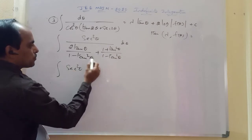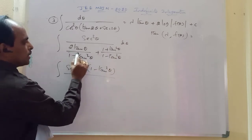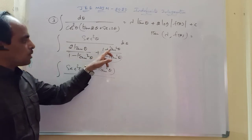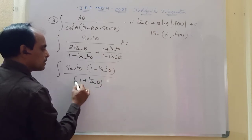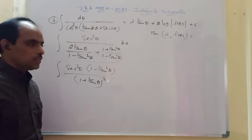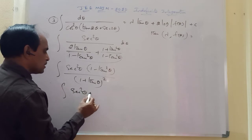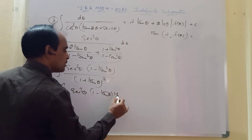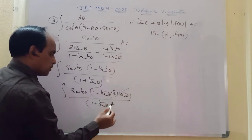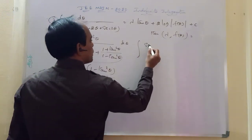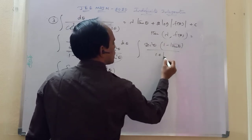Taking the LCM as (1 − tan²θ), the numerator becomes 2 tan θ + 1 + tan²θ, which factors as (1 + tan θ)². The denominator is (1 − tan²θ) = (1 − tan θ)(1 + tan θ). So the integrand simplifies to sec²θ · (1 − tan θ)/(1 + tan θ).